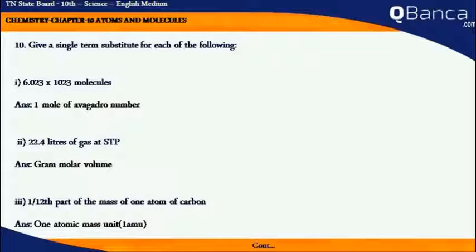Give a single term substitute for each of the following. 6.023 into 10 to the power of 23 molecules is the 1 mole of Avogadro number.